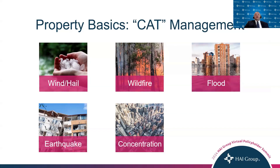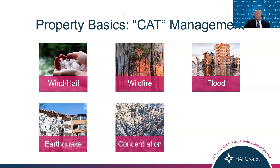CAT management — these are exposures that could cause catastrophic losses, not just to one policyholder but to multiple policyholders during any one event. These include things like wind, hail, wildfires, floods, and earthquake. Underwriters utilize tools to help determine the level of exposure to these catastrophic events. For example, the tools have shown that the West Coast is prone to more wildfires and earthquakes, the East Coast is prone to hurricanes, and the Midwest and West are prone to tornadoes and flooding.